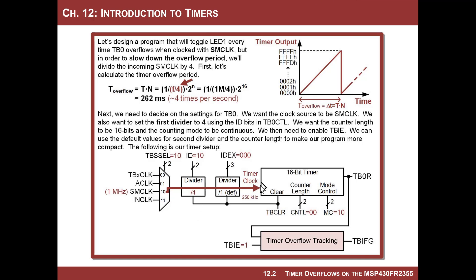We've looked at timer overflows where we use a slow clock — like A clock — which was 32 kilohertz. If we didn't do anything, it gave a relatively slow counter, and that's about the slowest overflow you can have with a 16-bit timer, counting up to 2 to the 16 and rolling over. We reduced it to 12 bits so it overflowed faster at FFF. Then we switched to SM clock, which was really fast at the 16-bit timer.